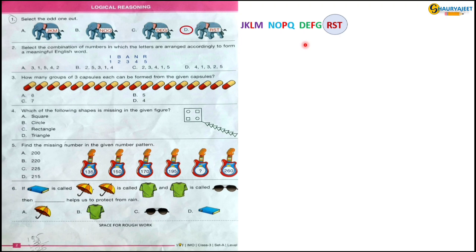Question 2: Select the combination of numbers in which the letters are arranged accordingly to form a meaningful English word. By these alphabets, the meaningful English word formed will be BRAIN, so the correct option is option B.